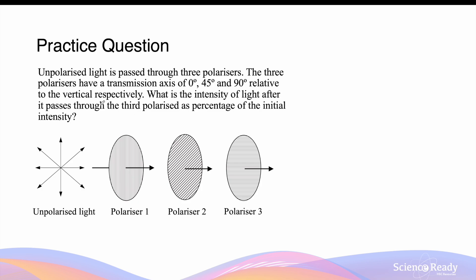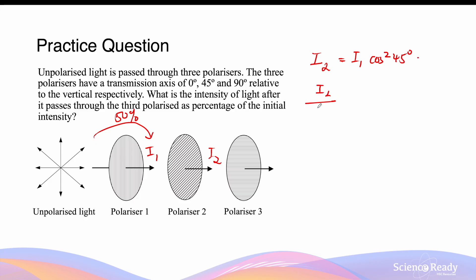Let's take a look at another question. Unpolarised light is passed through three polarisers with transmission axes of 0 degrees, 45 degrees, and 90 degrees relative to the vertical respectively. After the unpolarised light passes through the first polariser, it is reduced by 50%, so only 50% of the intensity remains. The angle between the transmission axis of the second polariser and the polarising axis of the light coming out of the first polariser is 45 degrees. So I2 equals I1 cosine squared 45 degrees, giving I2 over I1 equal to one half. This further halves the intensity from 50% to 25%.